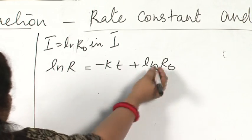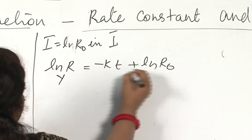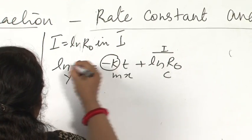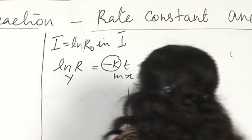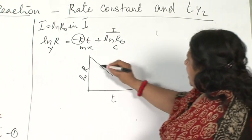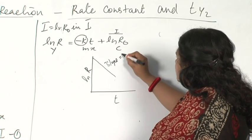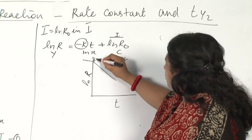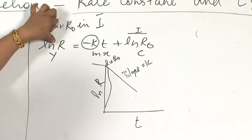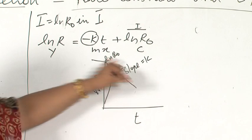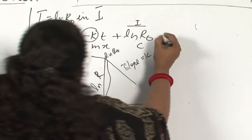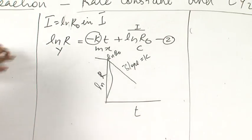This is in the form y = mx + c, where ln R₀ is the intercept and −K is the slope. So if I plot a diagram of ln R versus t, it will be a straight line with slope equal to −K and intercept equal to ln R₀. This is equation 2.